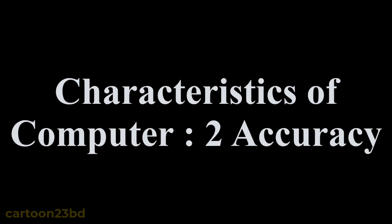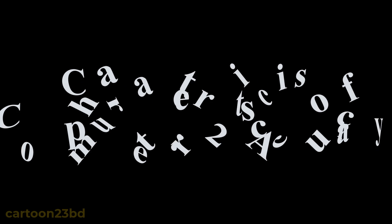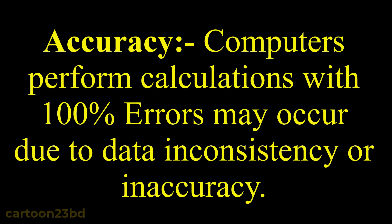Characteristics of Computer 2: Accuracy. Computers perform calculations with 100% accuracy. Errors may occur due to data inconsistency or inaccuracy in the input.